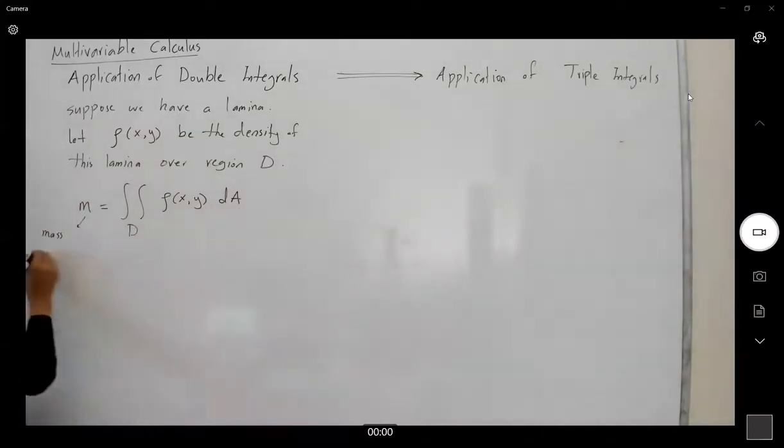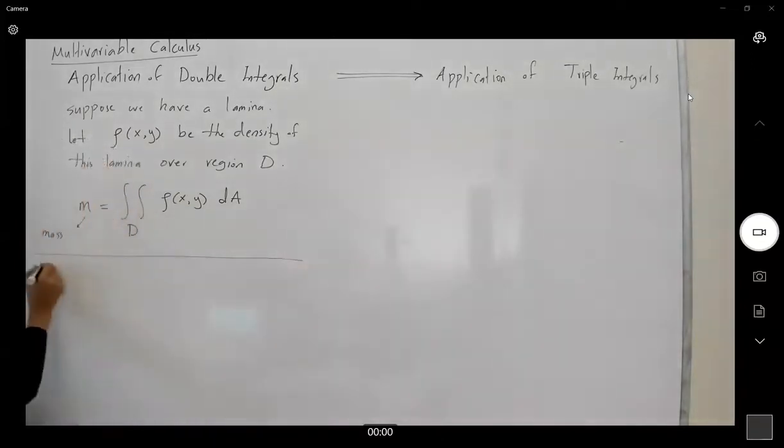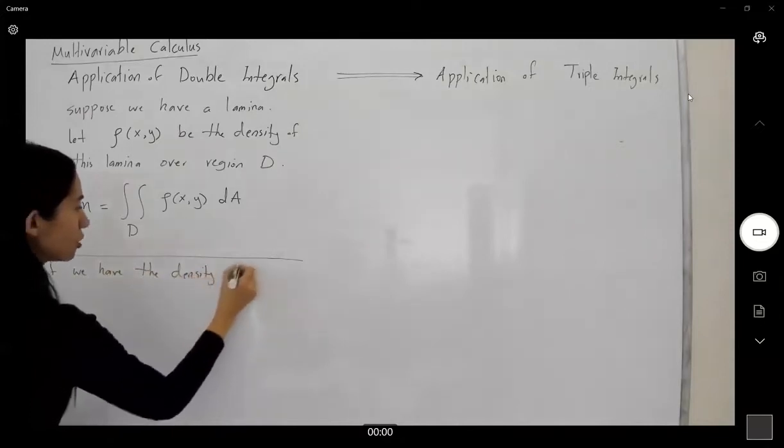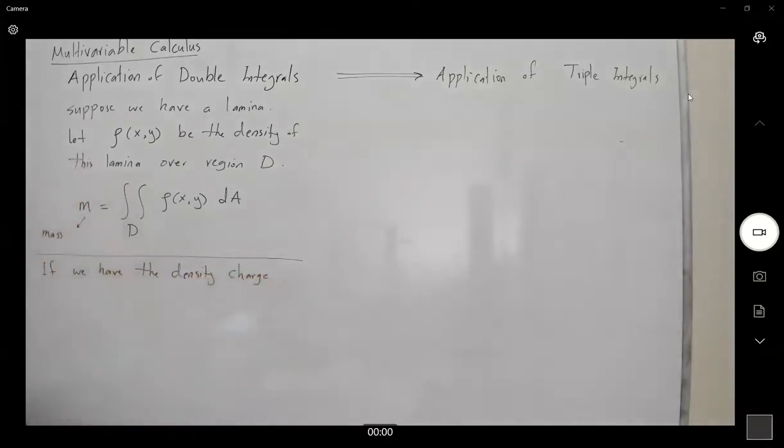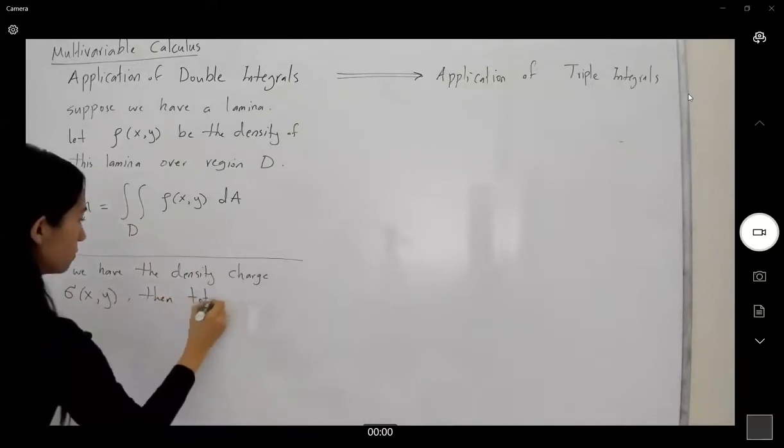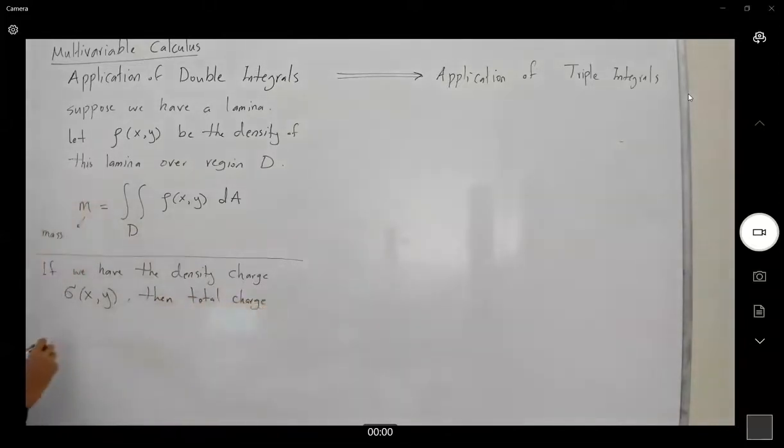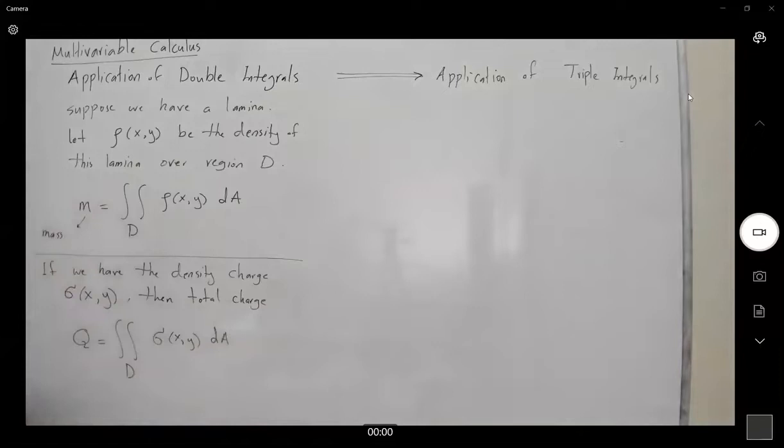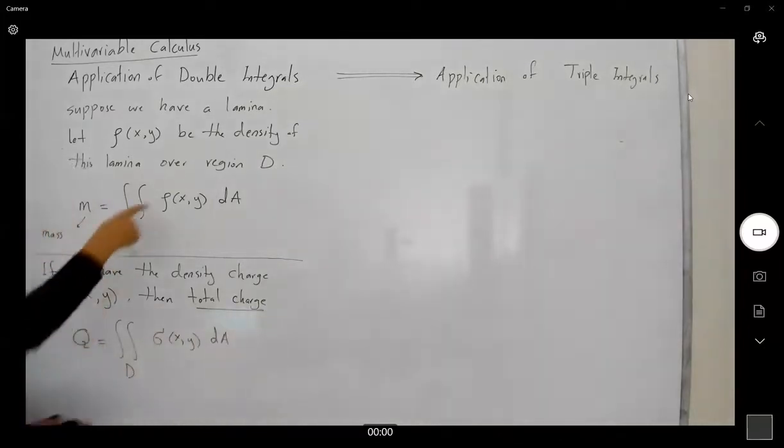We can also treat this as, in physics, as a density charge. So if you have the density charge given by the function sigma(x,y), then the total charge is defined this way. Q is equal to double integral of sigma(x,y) dA over D. So here you have the mass and here you have the total charge. For both of them, you're using density function.